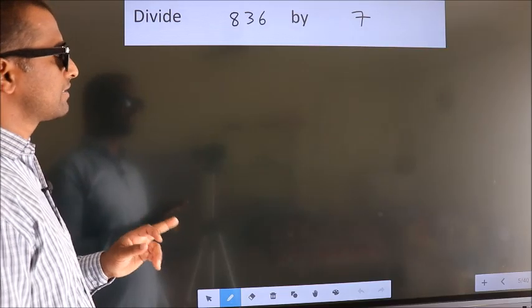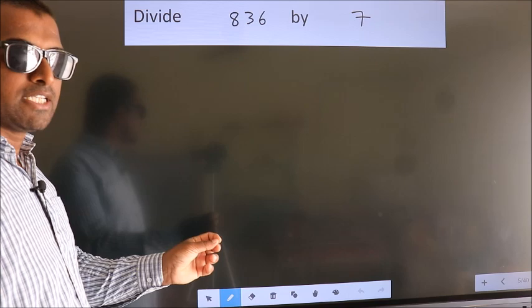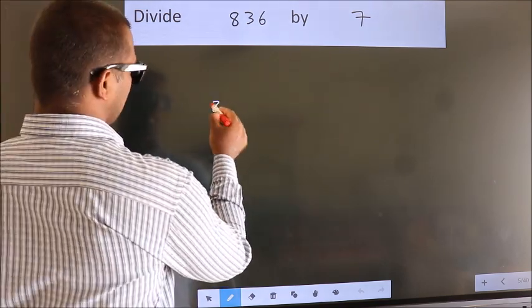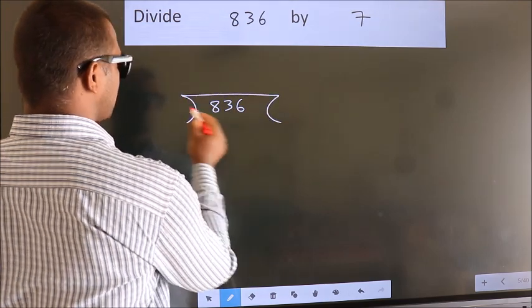Divide 836 by 7. To do this division, we should frame it in this way. 836 here, 7 here.